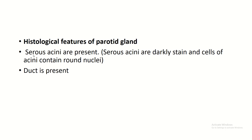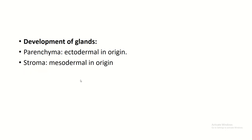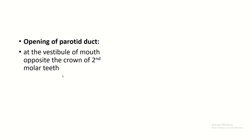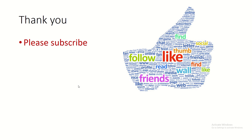Histologically, we find serous acini and ducts. Parenchyma is of ectodermal origin; stroma is of mesodermal origin. The opening of the parotid duct is at the vestibule of the mouth, opposite the crown of the second upper molar teeth.